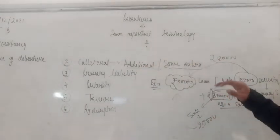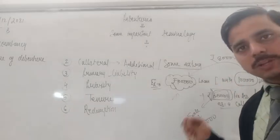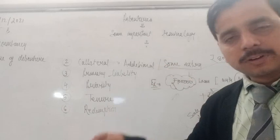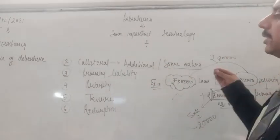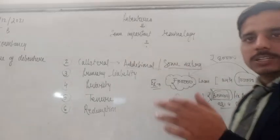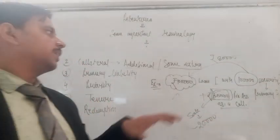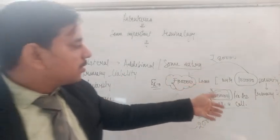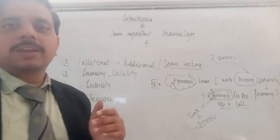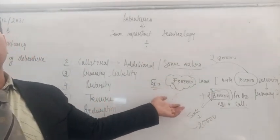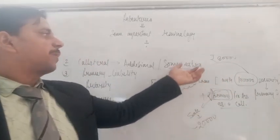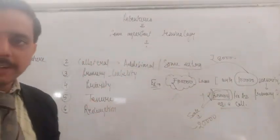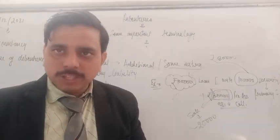Collateral means additional or something extra. When we talk about collateral security, it is the security given by the company to the lending institution as additional security. यानि company जब lenders को primary security के अलावा उनकी assurance के लिए additional security रखती है, उसी को collateral security कहते हैं। In case the company makes any default in payment, primary security is sold first, and if full recovery is not achieved, remaining recovery is done from the collateral security.